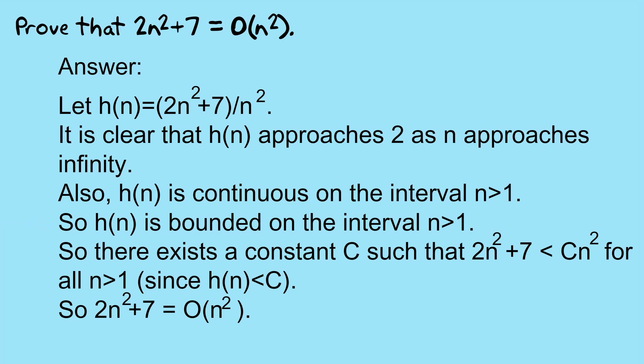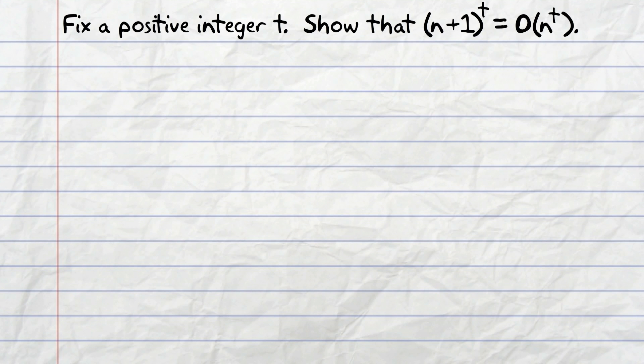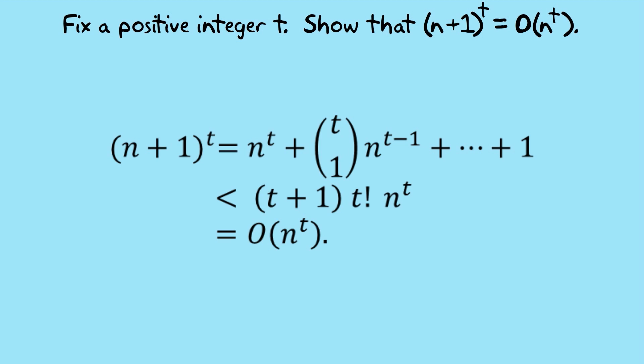On to the second question. And here it may be useful to think of t as being something like 5. So we can expand the expression and we get n^t plus t choose 1 into n^(t minus 1) plus all the way down to plus 1. And here's a chance to be sloppy in mathematics, which you don't often get this chance. So all we have to show is a constant. So don't get involved in trying to fine-tune this.